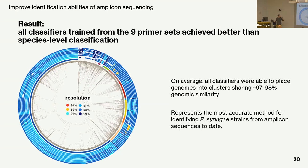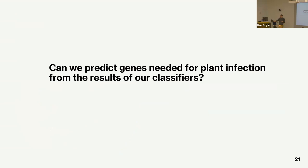These classification models represent the most accurate method for identifying Pseudomonas syringae strains from marker gene data. This brings up the next question: is it good enough to actually predict virulence factors the pathogen might be carrying?